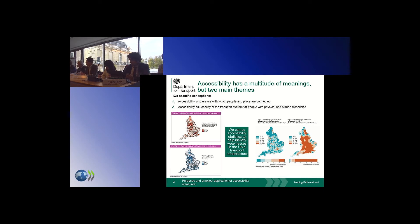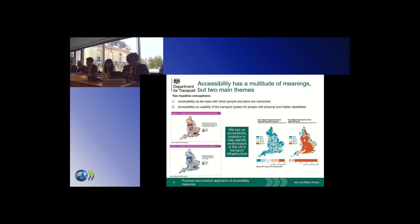Just to give a definition from the guidance: accessibility can be used to signify the range of opportunities and choices people have in connecting to jobs, services, family and friends in a timely and affordable manner. This takes into account land use — where people choose to live, where services or destinations they want to visit are located — as well as the availability, affordability and speed of transport options. That's the primary notion of accessibility I'm going to talk about, rather than the narrower but related concept of accessibility for those users who have some form of disability which encumbers travel.